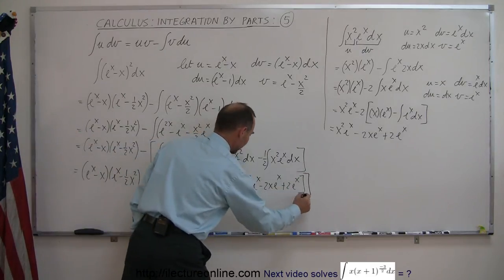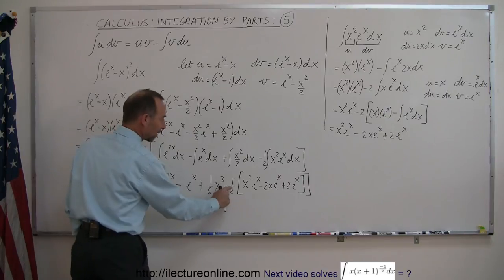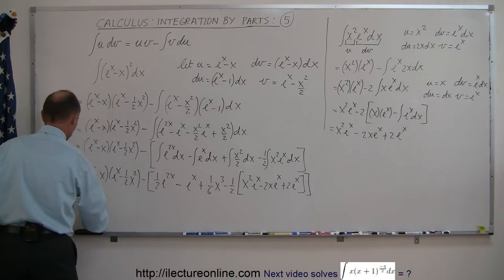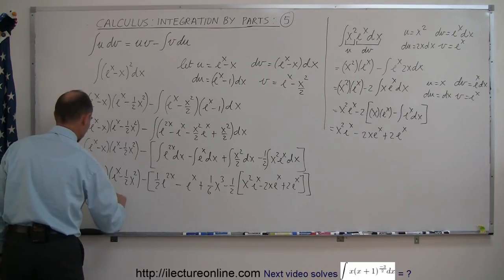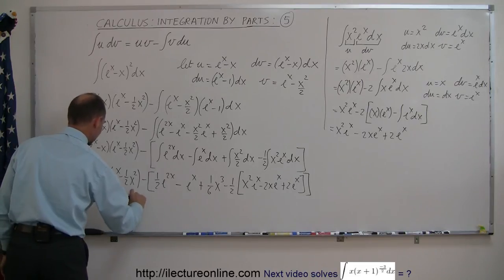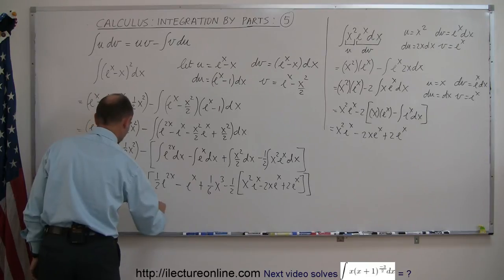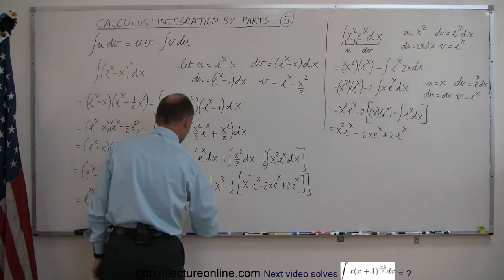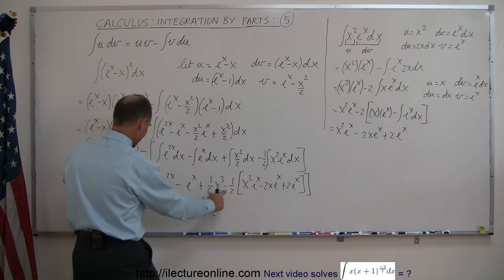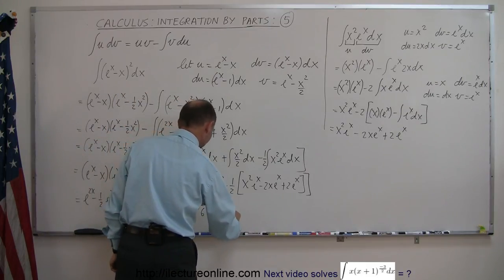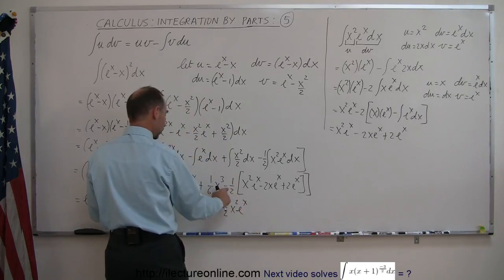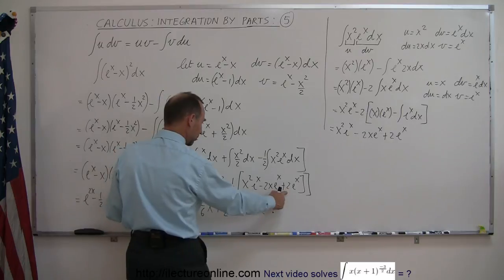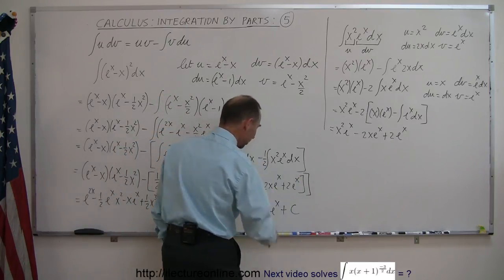Now the minus one half applies to everything in the bracket. Multiplying out the first product: e to the x times e to the x gives e to the 2x; e to the x times negative one half x squared gives minus one half x squared e to the x; negative x times e to the x gives minus x e to the x; and negative x times negative one half x squared gives plus one half x cubed. Then distributing the remaining terms and collecting, we end up with plus one half x squared e to the x, minus x e to the x, plus e to the x, and a constant of integration.